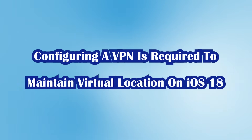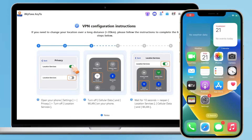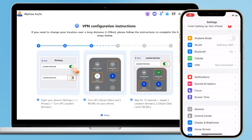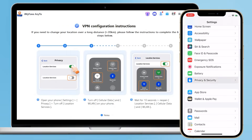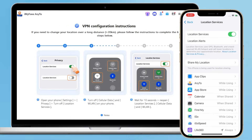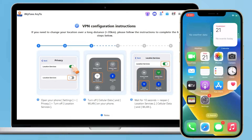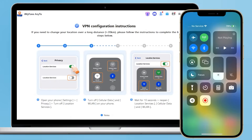Note: Configuring a VPN is required to maintain a virtual location on iOS 18. Step 1: Open your iPhone Settings, go to Privacy, and turn off Location Services. Step 2: Turn off Cellular Data and LAN on your iPhone.